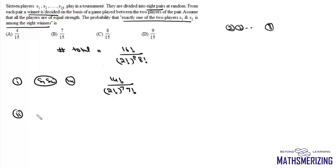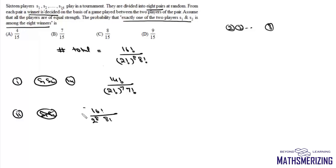The second case is when S1 and S2 are not paired against each other. The number of such pairings will be the total possibilities — which is 16! / (2^8 · 8!) — minus 14! / (2^7 · 7!).